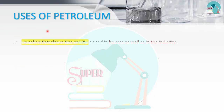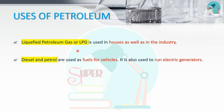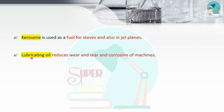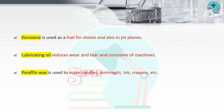Petroleum products and their uses: liquefied gas is used in homes and industry; diesel is used as fuel in electric generators; petrol is used for dry cleaning; kerosene is used in stoves and as jet plane fuel; lubricating oil prevents corrosion and reduces friction; paraffin wax is used to make candles, ointments, ink, and crayons; bitumen is used for road surfacing.